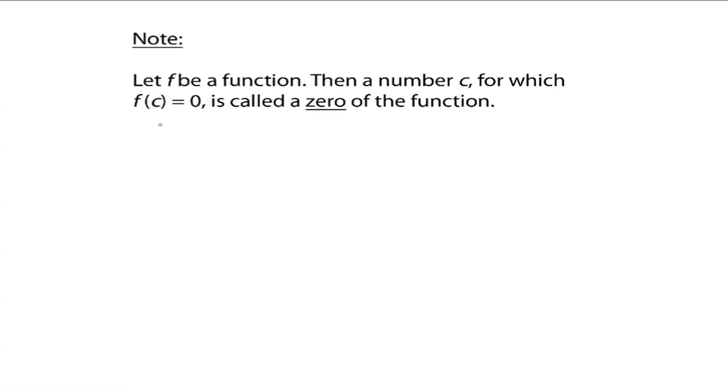In other words, if you take any number, evaluate it into your function f, and the function value comes out to be zero, then that number you evaluated your function with, c, is called a zero of the function. So if you have something like, say...